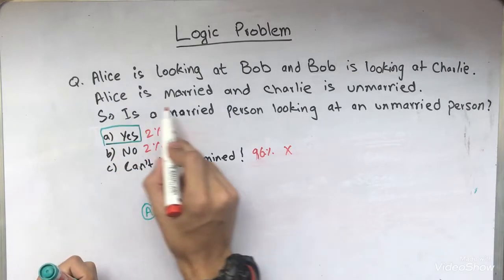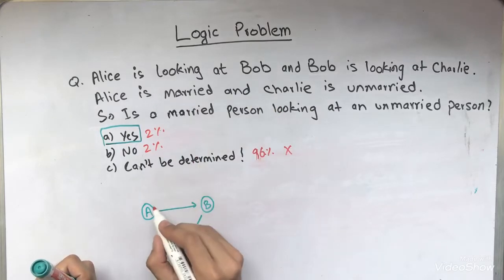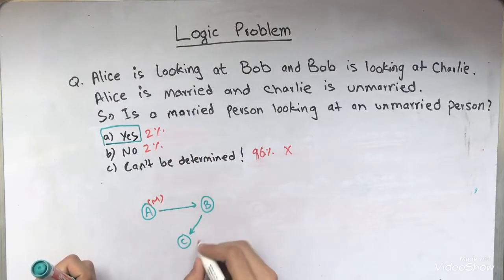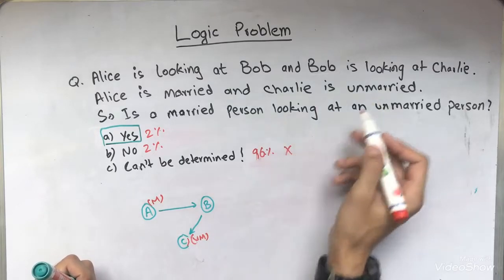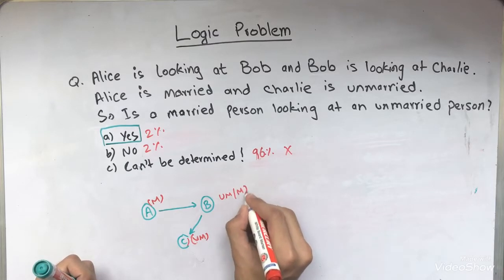The next thing I'm going to do is to write their marital statuses. So Alice is married and Charlie is unmarried. That's what is given in the problem. We do not know about the marital status of Bob. So we're going to just write unmarried slash married or whatever. We don't know.